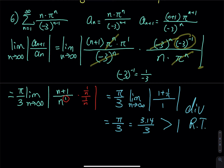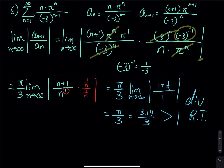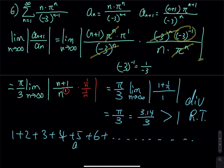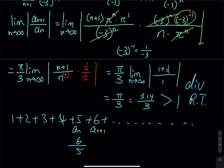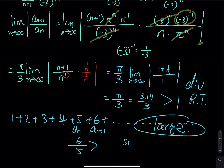Ascending order looks like 1 + 2 + 3 + 4 + 5 + 6 and so on. This is a_m and a_{m+1}: six divided by five is greater than 1. The last couple of terms are very large, so the sum equals infinity — therefore the series is divergent.